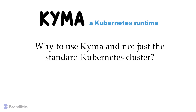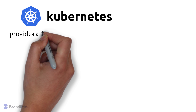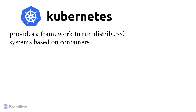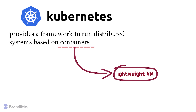First, let's understand a bit about Kubernetes, since Kyma runs on top of it. Kubernetes fundamentally provides a framework to run distributed systems based on containers. You can think of a container as a very lightweight virtual machine containing a small piece of software which serves some larger application — also known as a microservice. With this, Kubernetes provides a number of components that are used to manage the lifecycle of a container. However, it leaves the choice of application dependencies such as messaging buses,